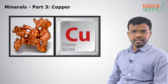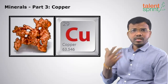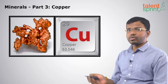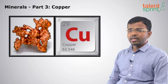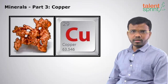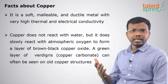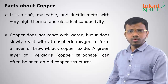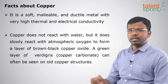Earlier we discussed iron, which is a ferrous metal, and aluminium, which is a non-ferrous metal. Copper is also a non-ferrous metal. It has an atomic number of 29 and an atomic mass of 63.5. Moving on to the facts about copper: copper is a soft, malleable metal — malleable means it can be drawn into sheets — and it is ductile, meaning it can be drawn into wires.